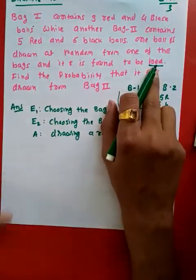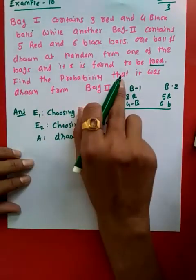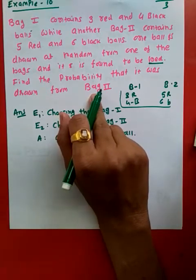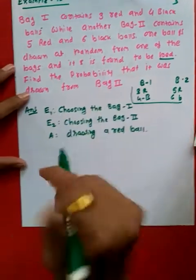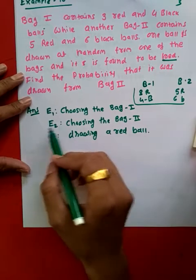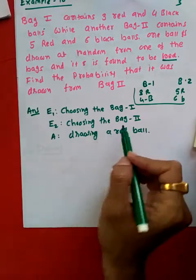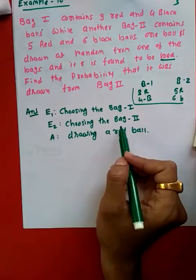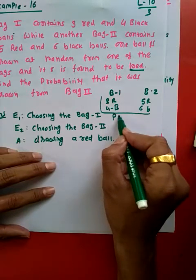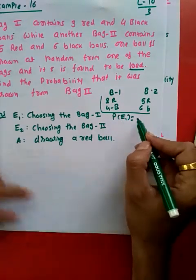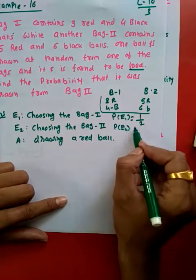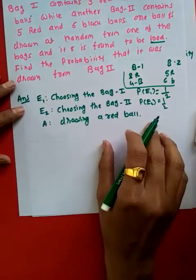One ball is drawn at random from one of the bags and it is found to be red. We need to find the probability that it was drawn from bag 2 — यह reverse probability का case है. Let event E1 be choosing a ball from bag 1 and event E2 be choosing from bag 2. Since there are two bags, P(E1) = 1/2 and P(E2) = 1/2.